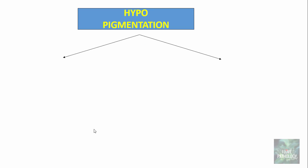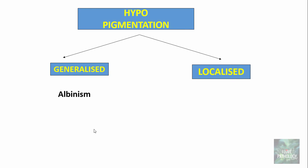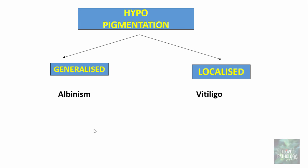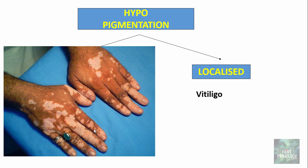Moving on to hypopigmentation, which can be generalized or localized. Under generalized hypopigmentation, the key example is albinism — the extreme form where there is no formation of melanin at all, due to deficiency of the enzyme tyrosinase. Localized hypopigmentation is most commonly exemplified by vitiligo, where localized hypopigmented patches are easily visible.